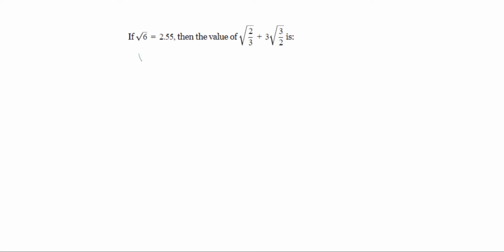We have to find the value of root 2 by 3 plus 3 root of 3 by 2. Here, 2 and 3 are not common, so what we will do is take the LCM. The LCM of 3 and 2 is 6 — that is 3 into 2. So the denominator and numerator — we multiply here by 3 over 3, and here by 2 over 2.